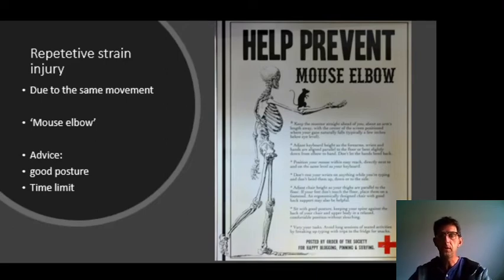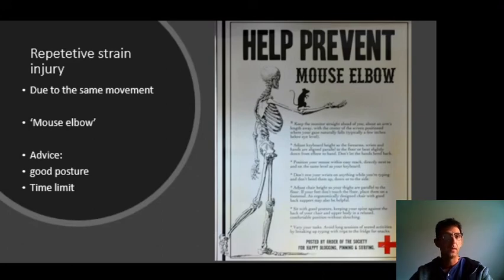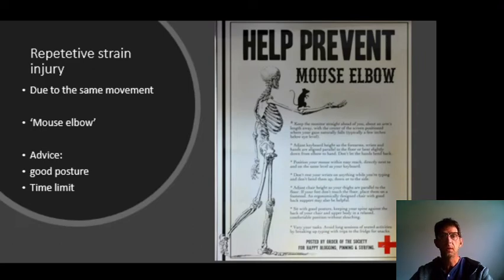Repetitive strain injury: if you put too much strain on the same muscles, same ligaments, same tendons, they can get worn. For example, the mouse elbow. A couple of things you can do: maintain good posture and set a time limit. Not just the mouse elbow — playing a game on your phone can also have those results.